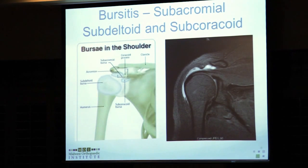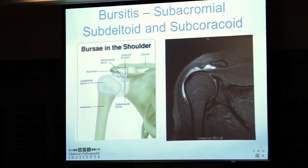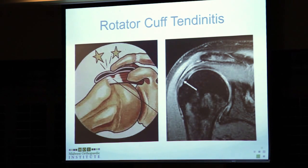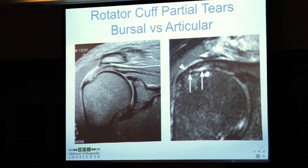The bursal anatomy includes the subacromial bursa right under that bony shelf, the subdeltoid bursa, and the subcoracoid bursa. On MRI, an inflamed bursa shows a fluid signal. As the patient elevates their arm, the bursa gets squeezed and can become painful and fibrotic. The underlying tendon then starts to show changes — intrinsic changes within the tendon — leading to partial thickness tears. A bursal-sided tear is associated with bursitis; an articular-sided partial tear is most commonly associated with overload.